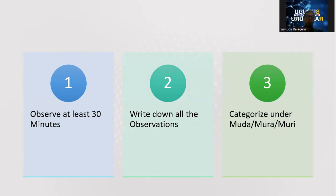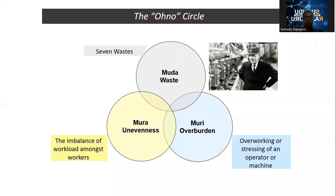After all things are brought onto the paper, you have to categorize the observations. Taiichi Ohno introduced three categories: Muda, Mura, and Muri — Japanese words. Muda means waste. According to Taiichi Ohno, he originally introduced seven types of waste in manufacturing, but nowadays researchers have added one more, so currently we talk about eight types of waste in manufacturing.